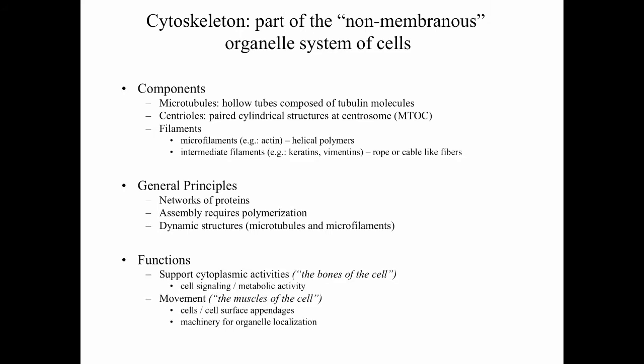The cytoskeleton supports cytoplasmic activities — things related to cell signaling and metabolic activity — and it also supports movement, including the cell moving and cell surface appendages moving. The cytoskeleton also provides the machinery for organelle movement and localization within the cell. These functions have been likened to the cytoskeleton being the bones and the muscles of the cell.